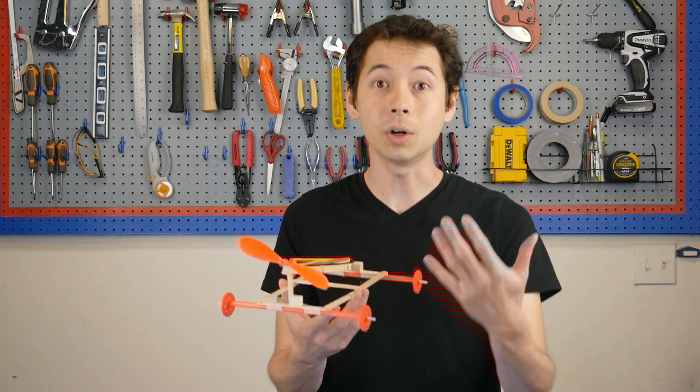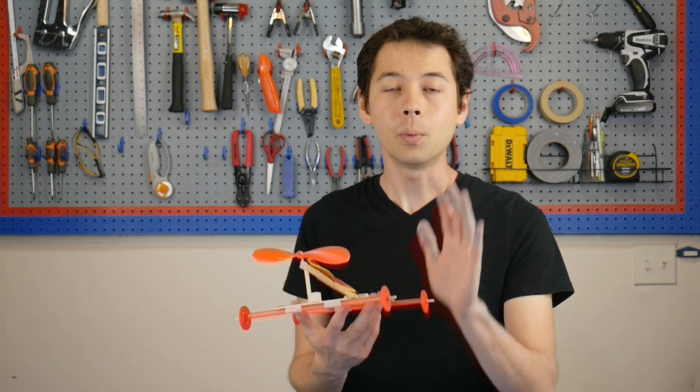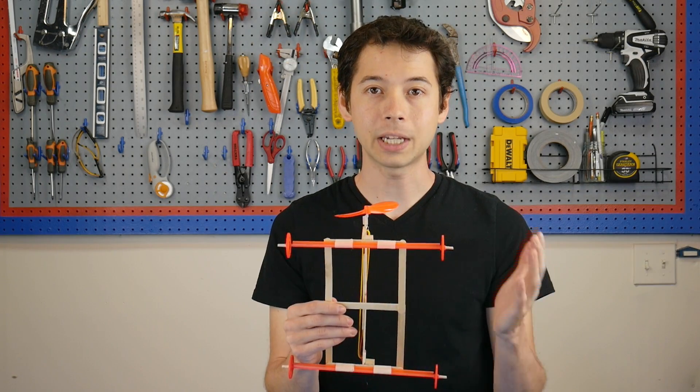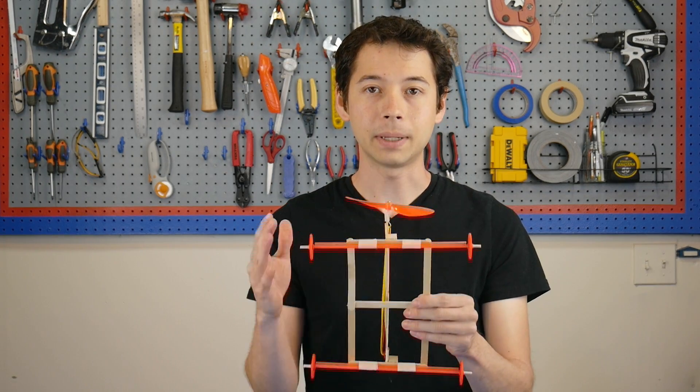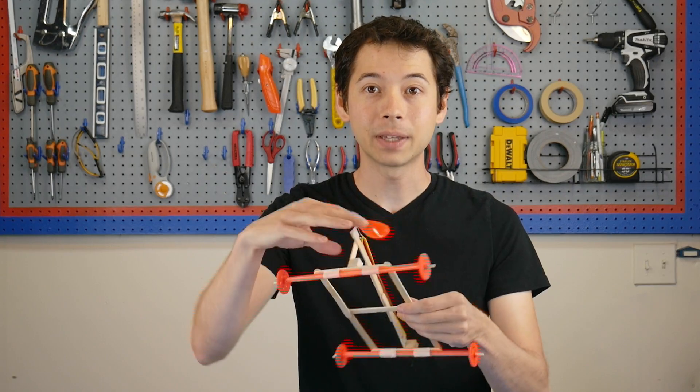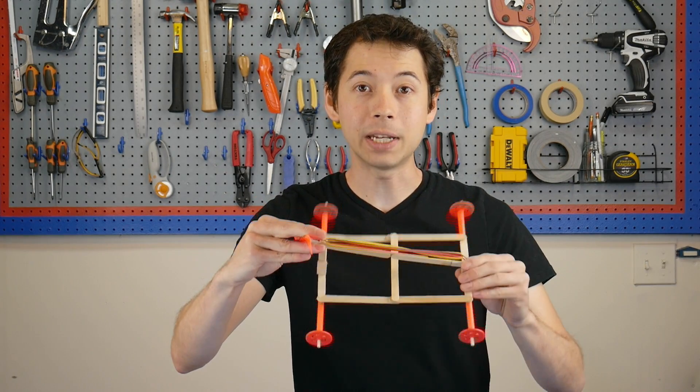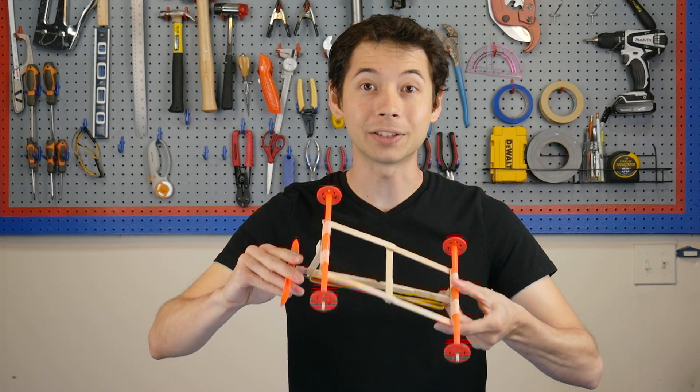Which, again, helps the car overcome that inertia. And one aside about the wheels that's not related to inertia. Having these wide-set wheels helps with the stability of the car. Because if we had a very narrow frame, the force of the unwinding rubber bands can actually cause the whole car to flip over.